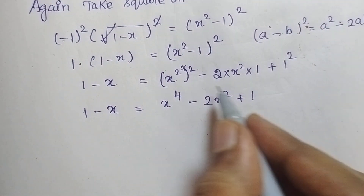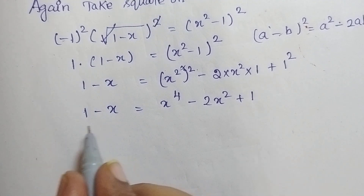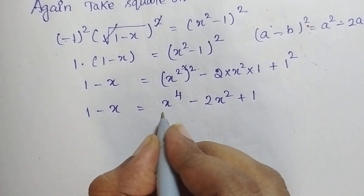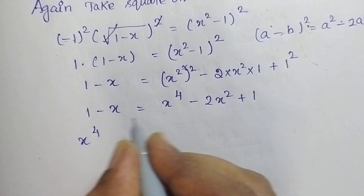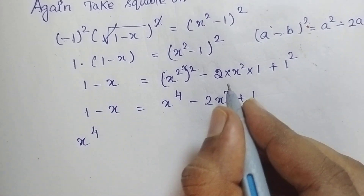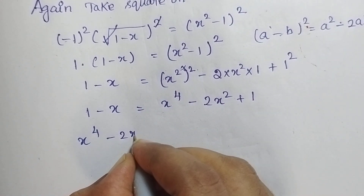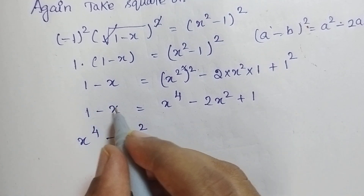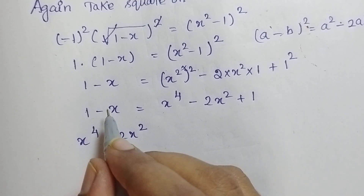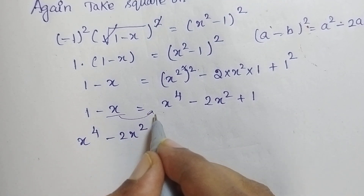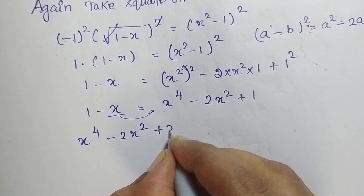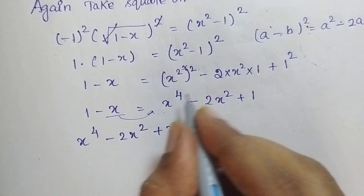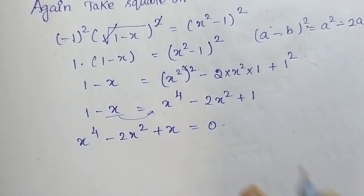Now I am going to arrange this in ascending order of power. So the first term is x⁴. There is no x³ term. The second term is -2x². The third term is x, which after moving to this side changes sign to +x. So 1 minus 1 cancels, therefore which is equal to 0.